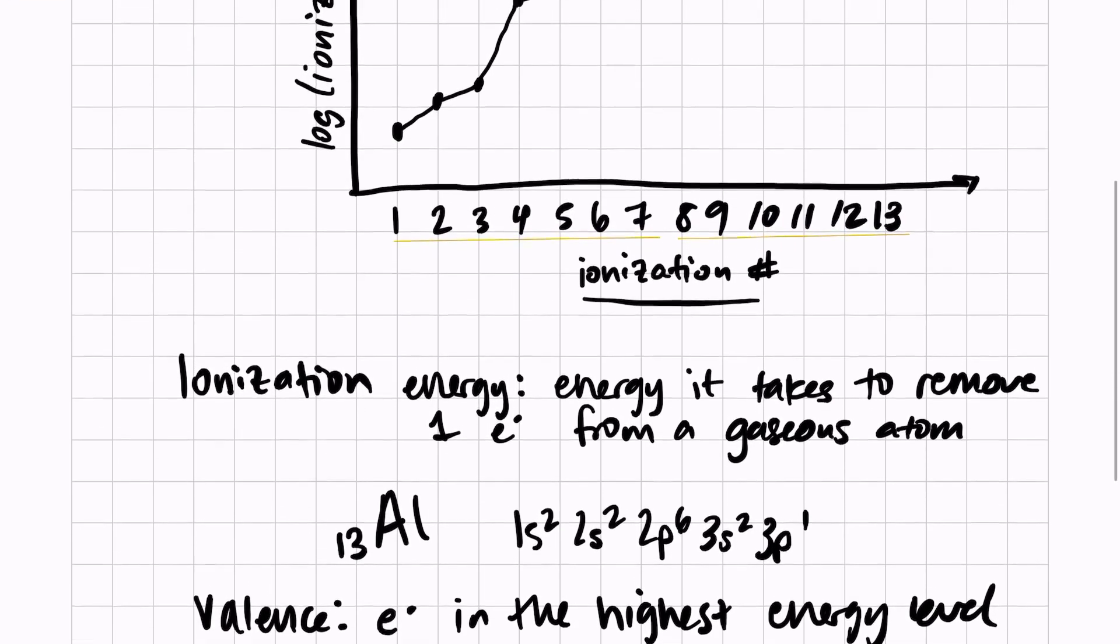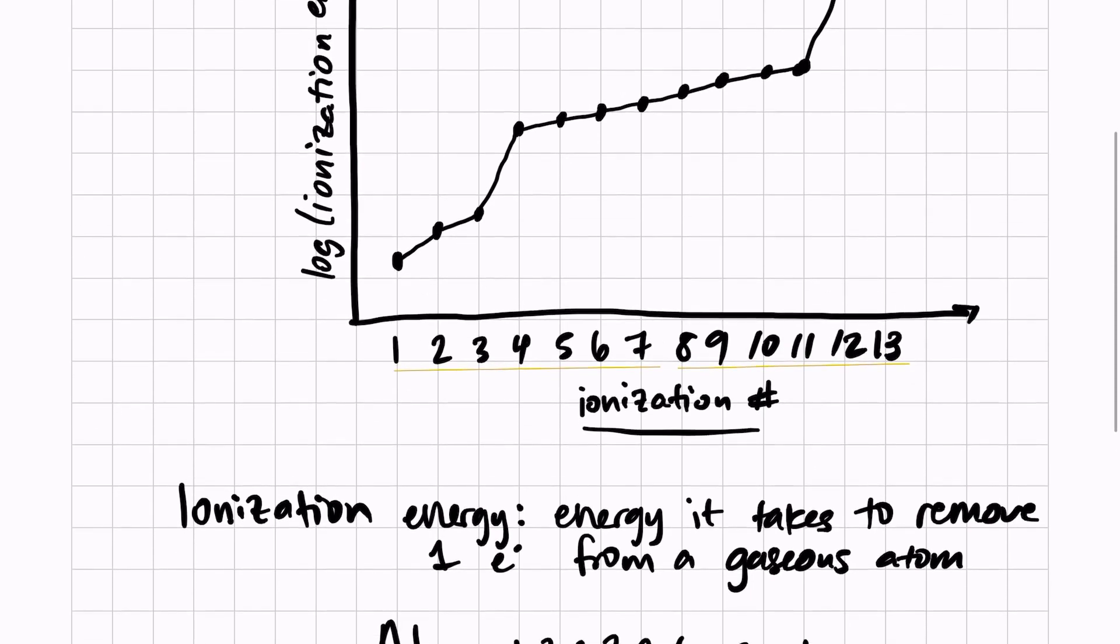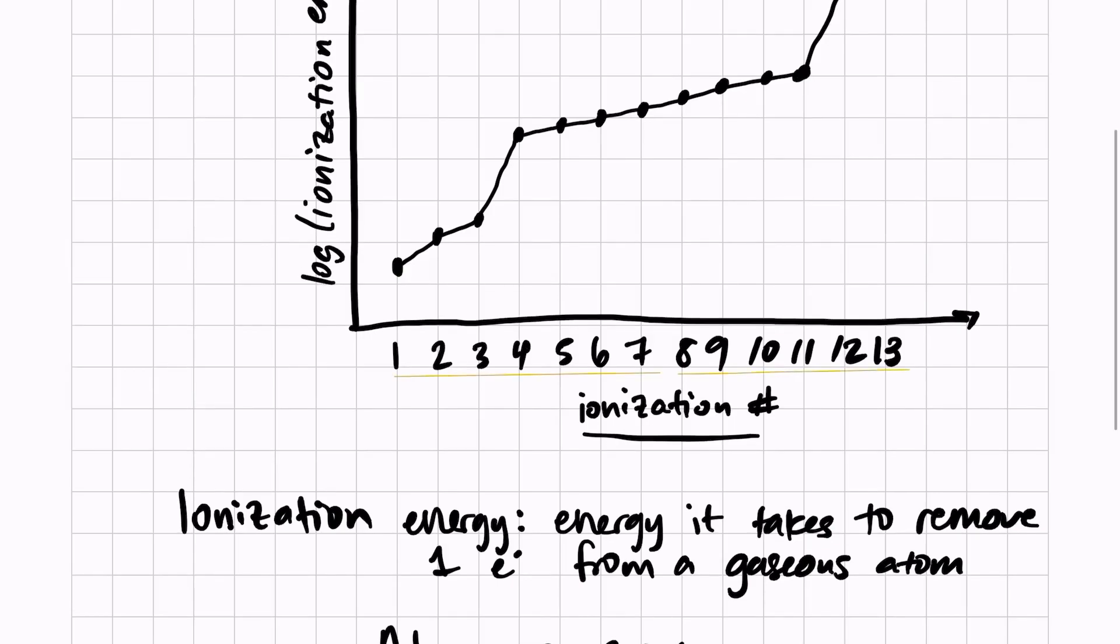Let's take a look. 3p¹ would be the electron that's lost first because it's the farthest from the nucleus. So the first ionization of aluminum, we can see, has the lowest amount of energy, and that makes sense. That is logical.